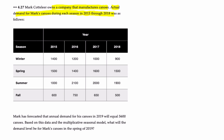There are four seasons — winter, spring, summer, and fall — and we have the data for each of the four years. Mark, the owner, has forecasted that the annual demand for canoes in 2019, which is the next year, will be 5,600. The requirement is, based on this data and using the multiplicative seasonal model, to determine the demand level for canoes in the spring of 2019.